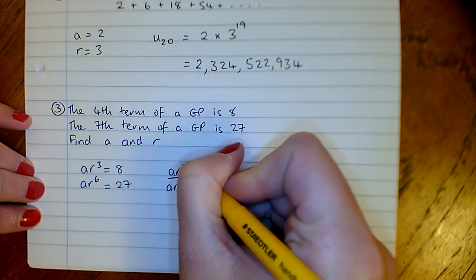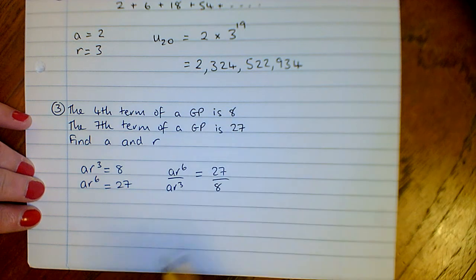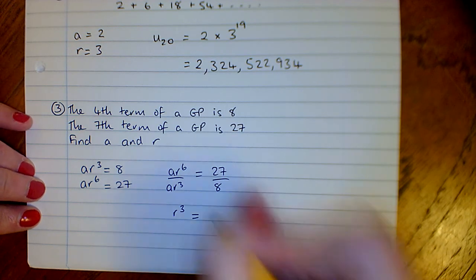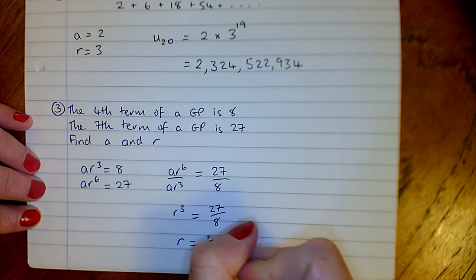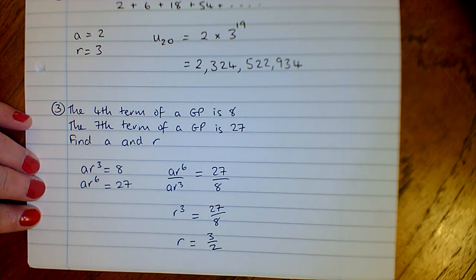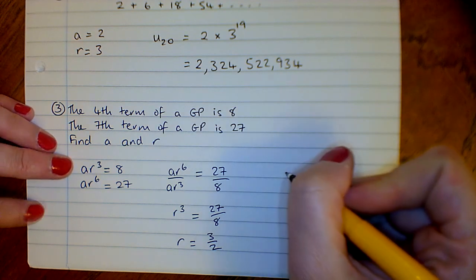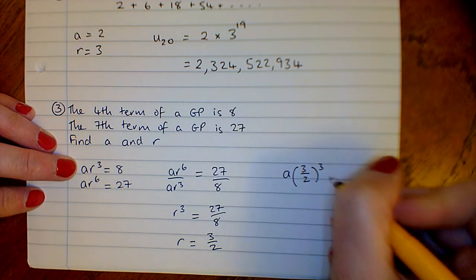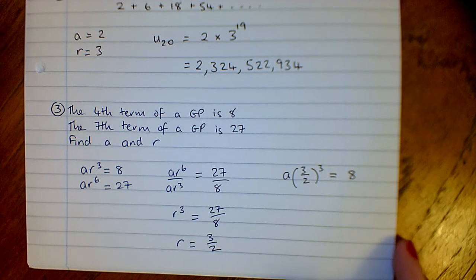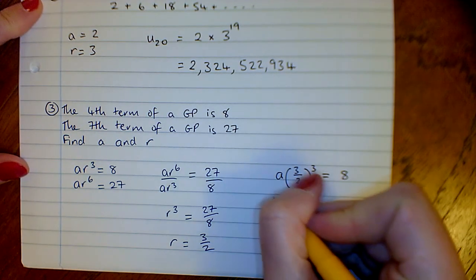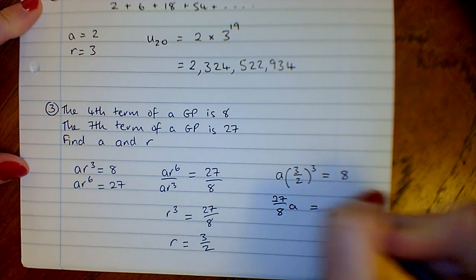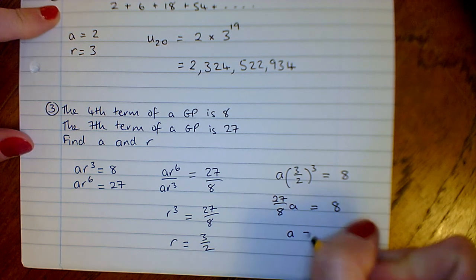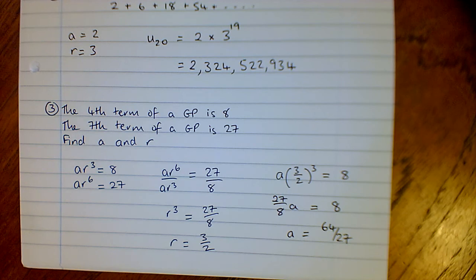If we put one over the other, you can see that the A's will cancel, and then using your rules of indices, R to the power of 6 over R cubed becomes R cubed. And then we can find R as the cube root. Putting that back into one of our equations, we've got A times 3 over 2 cubed equals 8. So that's 27 over 8 times A equals 8, which gives us A is 64 over 27.